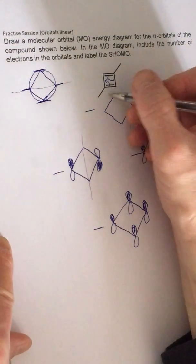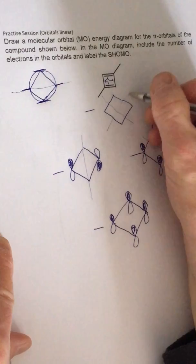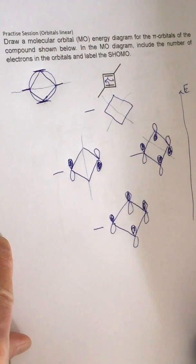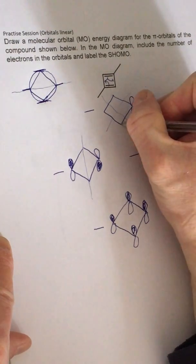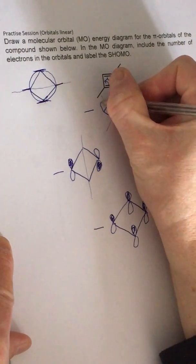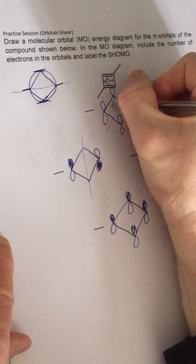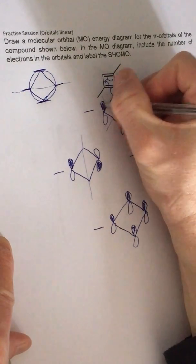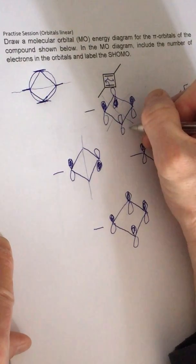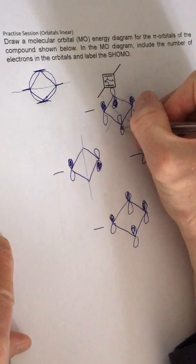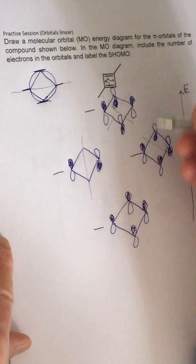And then finally we're going to have one with two nodes. We've got zero node, one node, two nodes - every orbital will have the opposite phase to the next one, so it's always going to be a symmetrical picture whichever way we do it. And that's right here. So that's two nodes, zero node, one node, two nodes.